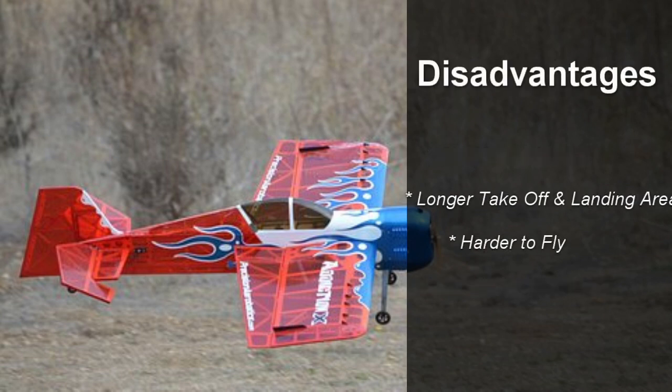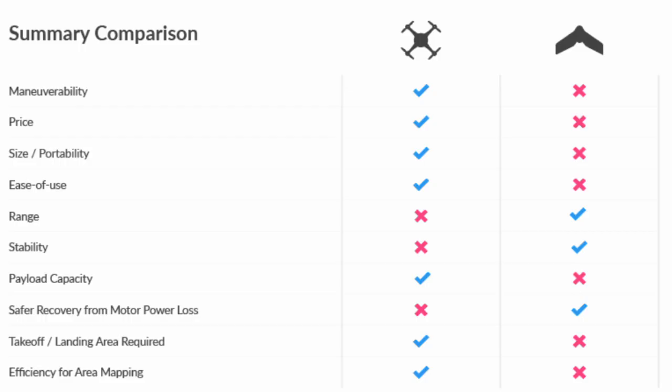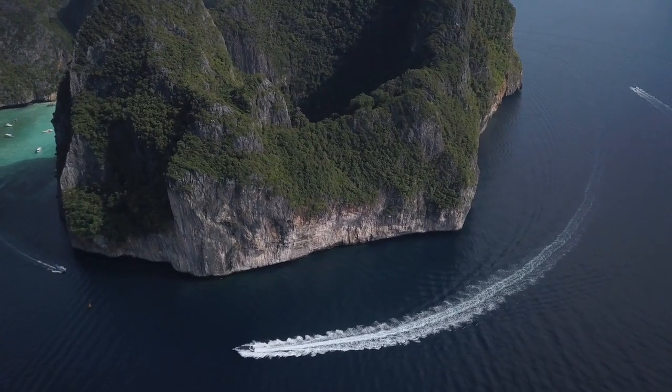Now let's see some of the disadvantages that fixed-wing aircraft have in comparison to multi-rotor aircraft. Fixed-wing aircraft require a larger takeoff and landing area. They are also a lot harder to fly and have a major learning curve compared to a multi-rotor aircraft. Let's take a look at this figure from dronedeploy.com that compares the two.